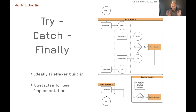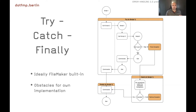Let's look briefly at how other languages implement error handling. Every language does it slightly differently, but the most widely used construct is try/catch/finally. When you write code and know things can go wrong from a certain point, you enclose that code in a try segment. You then define a catch segment after it, and optionally a finally segment.